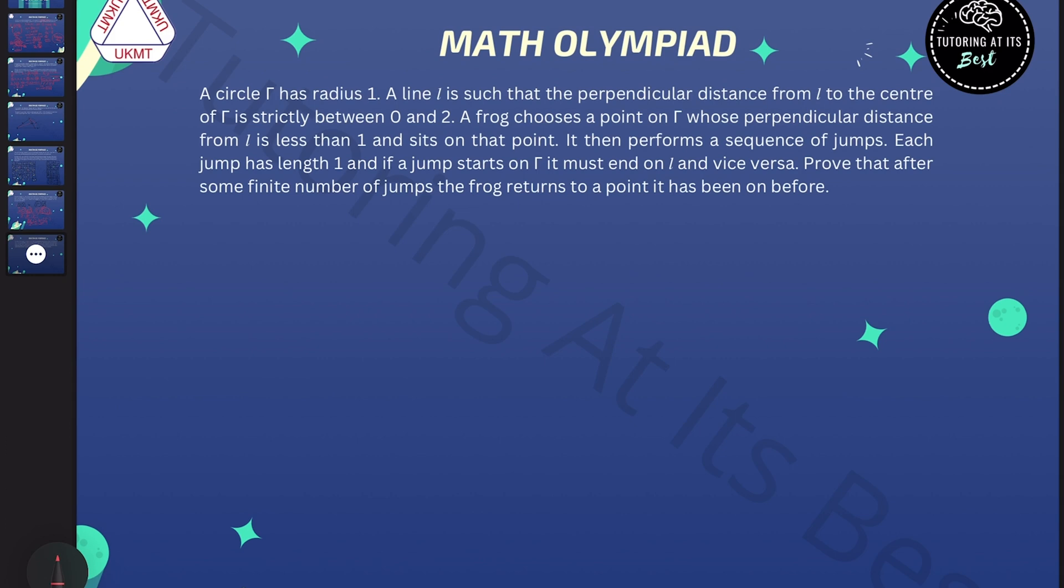A frog chooses a point on gamma whose perpendicular distance from L is less than 1 and sits on that point. It then performs a sequence of jumps and each jump has length 1. If a jump starts on gamma it must end on L and vice versa.